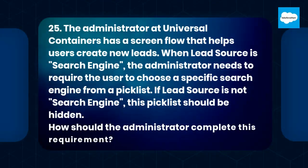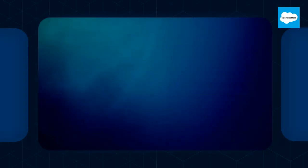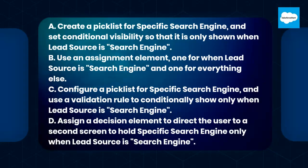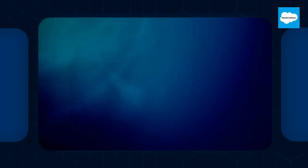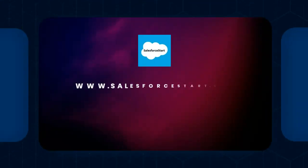Question 25. The administrator at Universal Containers has a screen flow that helps users create new leads. When lead source is search engine, the administrator needs to require the user to choose a specific search engine from a picklist. If lead source is not search engine, this picklist should be hidden. A. Create a picklist for specific search engine and set conditional visibility so that it is only shown when lead source is search engine. B. Use an assignment element, one for when lead source is search engine and one for everything else. C. Configure a picklist for specific search engine and use a validation rule to conditionally show only when lead source is search engine. D. Assign a decision element to direct the user to a second screen to hold specific search engine only when lead source is search engine. Answer: D. Assign a decision element to direct the user to a second screen to hold specific search engine.